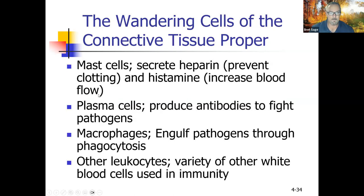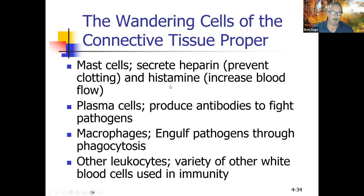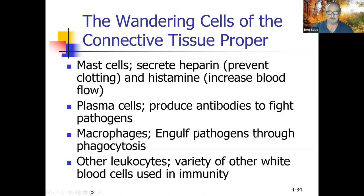Wandering cells (moving cells): mast cells secrete heparin, which prevents blood clotting, and histamines. When pollen enters your nose, mast cells release histamines causing inflammation — that's why antihistamines block them. Histamines allow blood vessel gaps to form, causing swelling. Plasma cells produce antibodies to fight pathogens. Macrophages are white blood cells that engulf pathogens through phagocytosis — wrapping around and digesting them. There are also other types of leukocytes used in immunity.